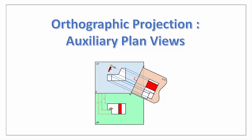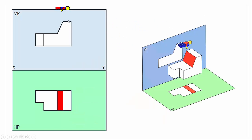Hello and welcome back to our webcast series on the topic of orthographic projection. In this video we're going to continue on from our previous video which focused on how to create an auxiliary elevation, and in this video we're going to look at how to create an auxiliary plan view of an object. We're going to conduct it in both 2D and 3D and try to explain exactly where the lines are coming from.